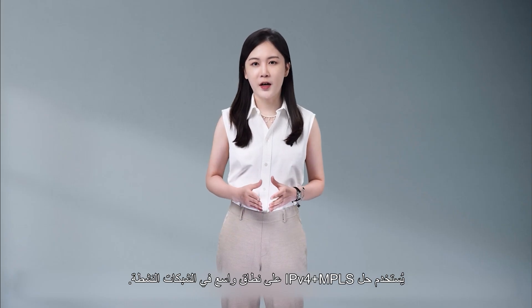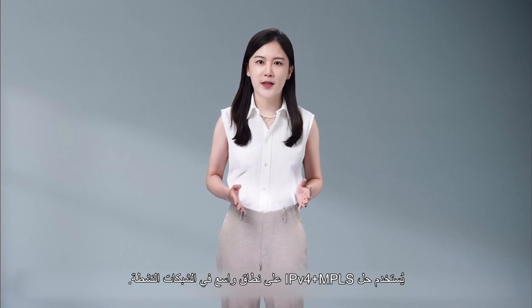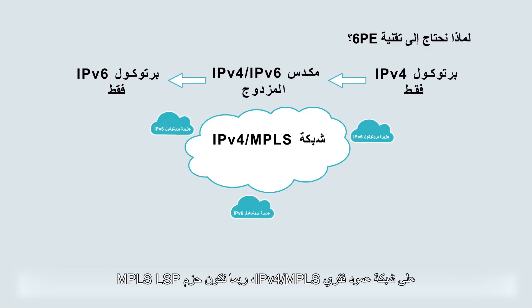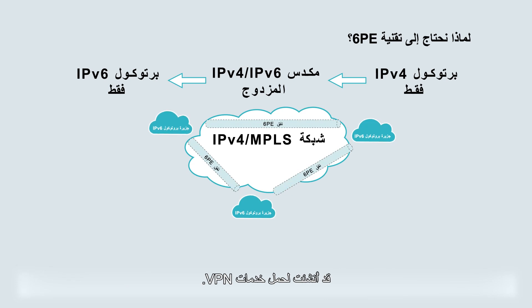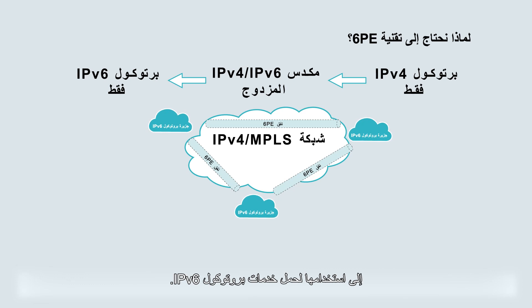The IPv4 plus MPLS solution is widely used on live networks. A key feature of this solution is that Ps on the backbone networks do not need to maintain service routes. This lowers the consumption of CPU, memory, routing entries, and other resources on Ps. On an IPv4 or MPLS backbone network, MPLS LSPs may have been established to carry VPN services. If such MPLS LSPs already exist, network administrators may want to use them to carry IPv6 services. This is where 6PE comes in.